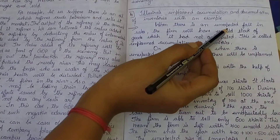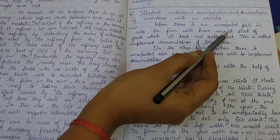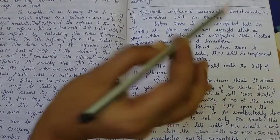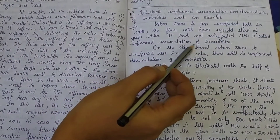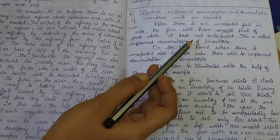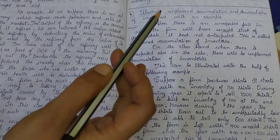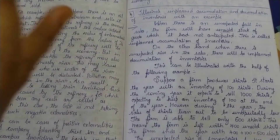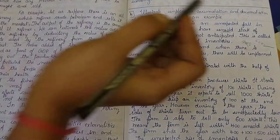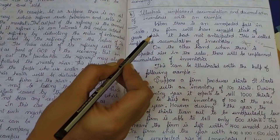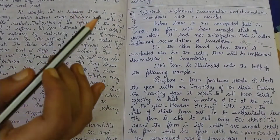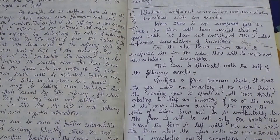When there is an unexpected fall in sales, the firm will have unsold stock of goods which it had not anticipated. This is called unplanned accumulation of inventories. For example, suppose you expected to sell one thousand shirts this year, but only six hundred shirts were sold. Because sales fell unexpectedly and were not planned for, this is called unplanned accumulation.